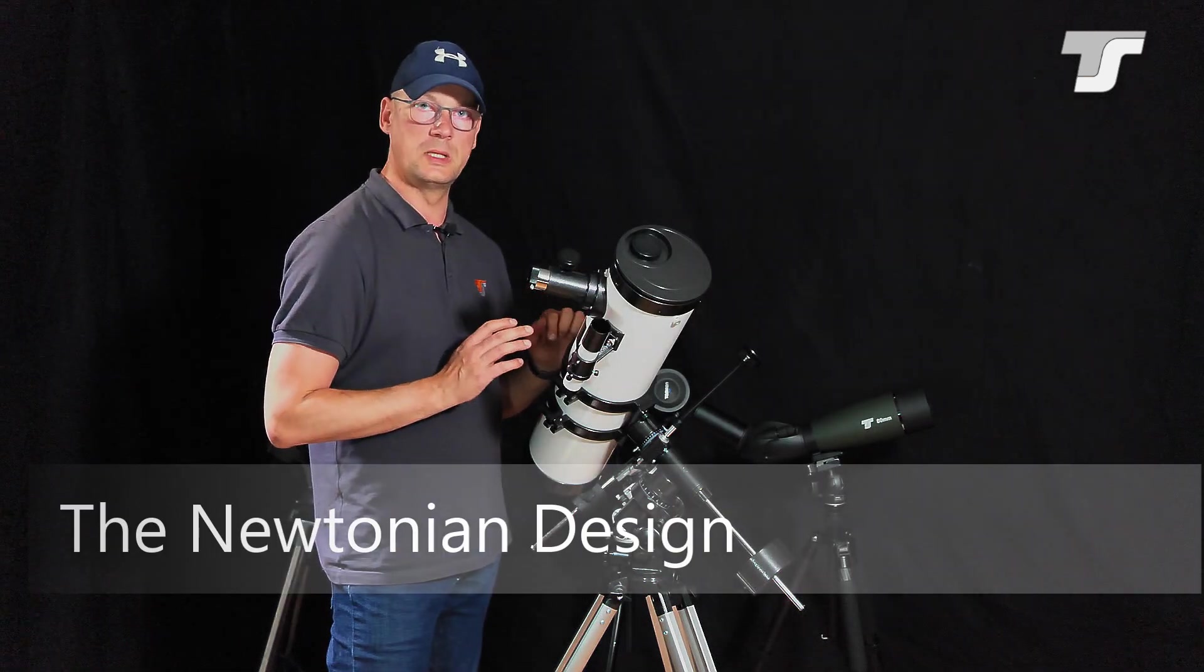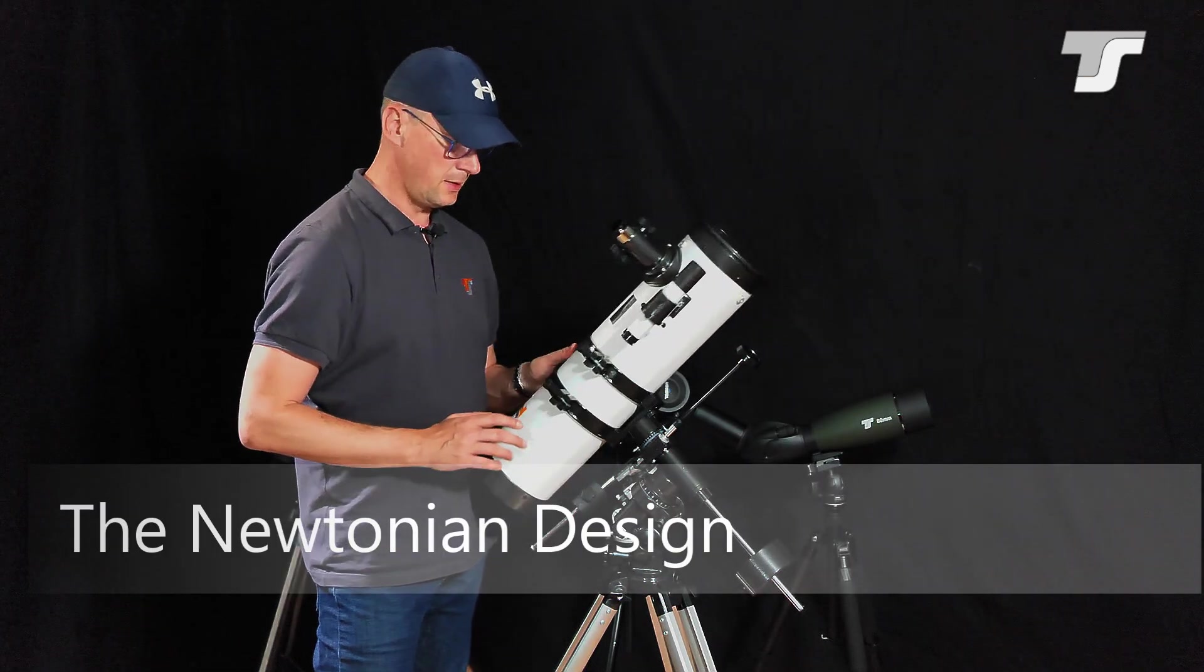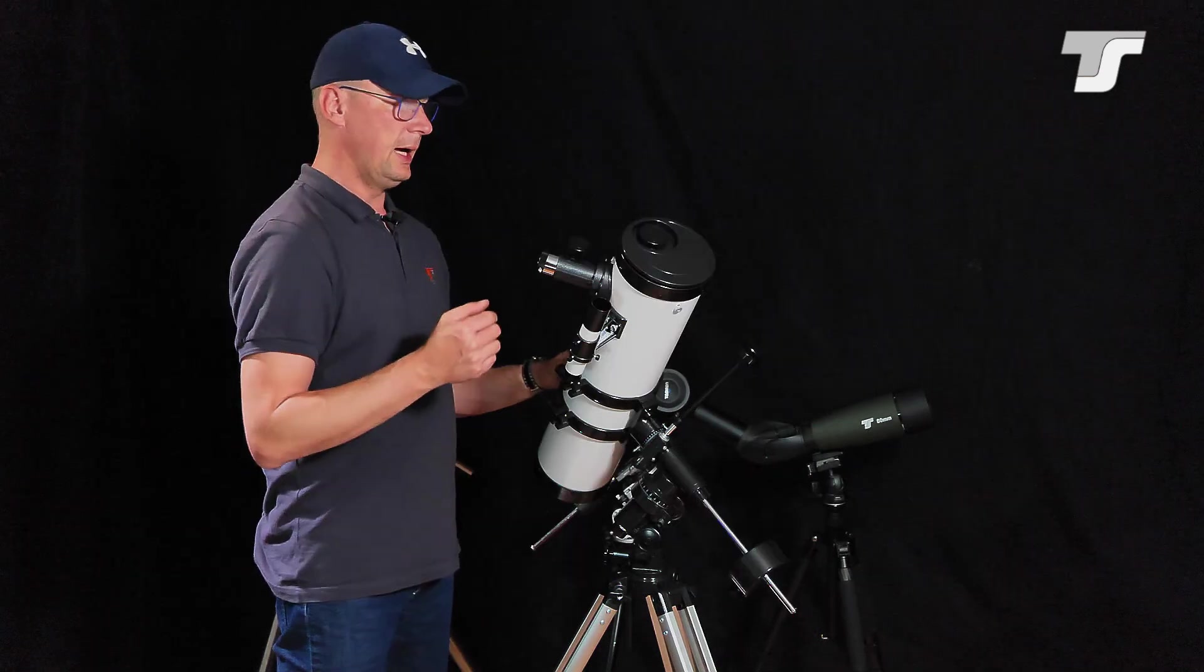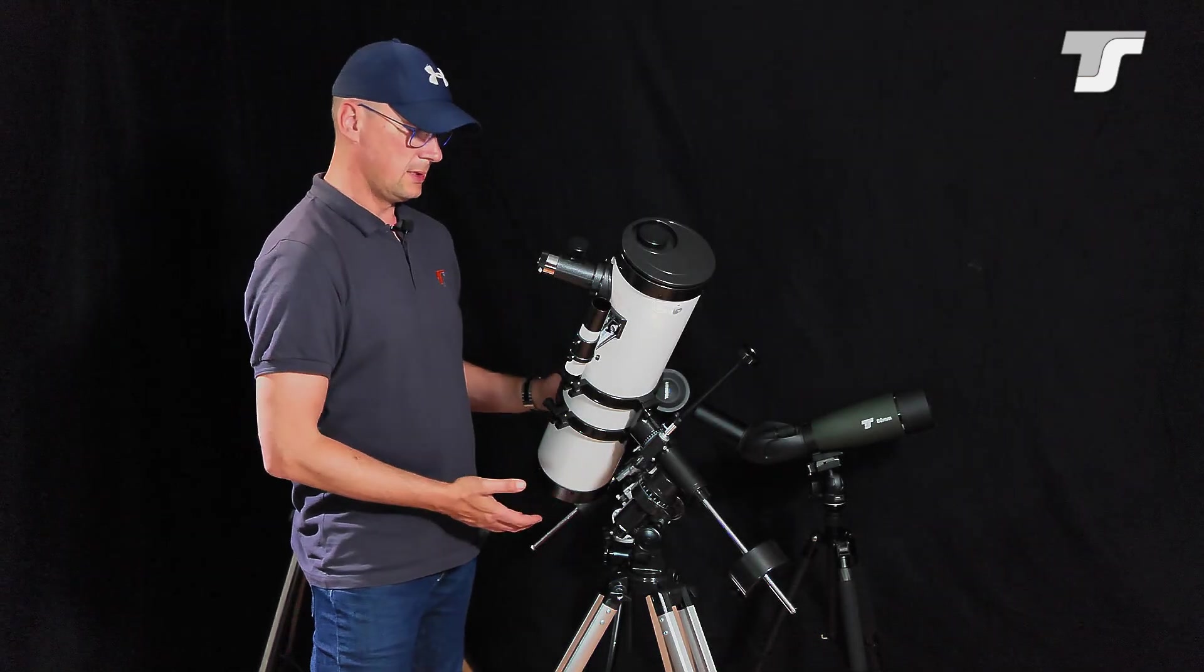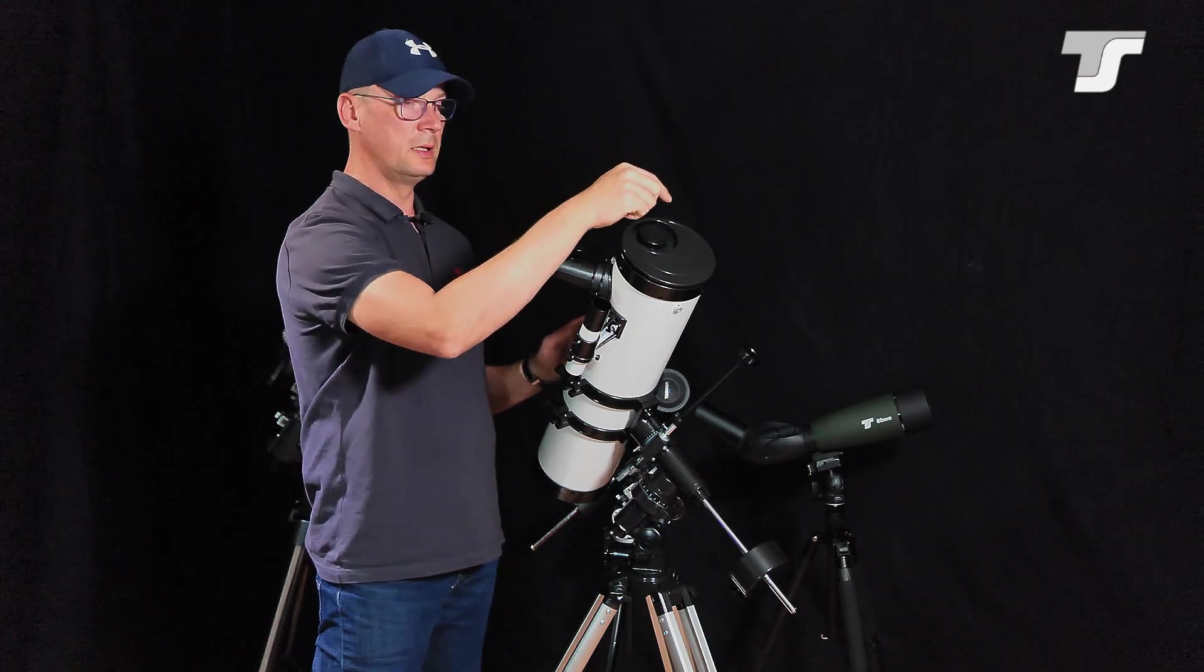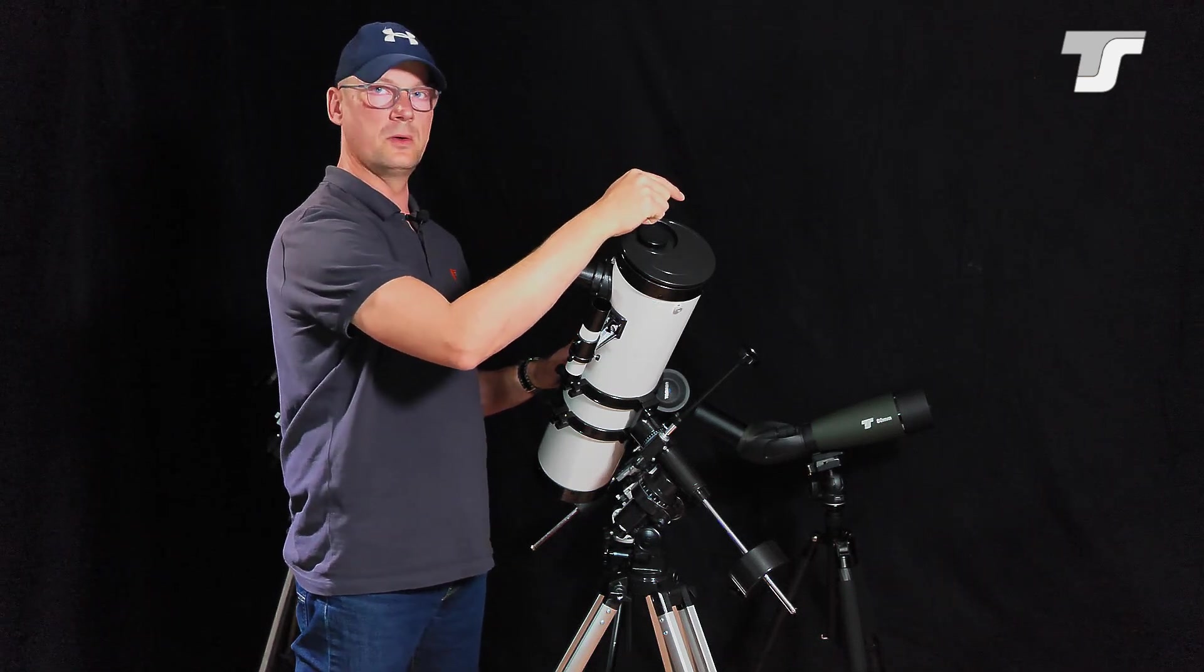With this Newtonian telescope, this is done with a curved primary mirror which is in the back here. The light is focused basically on a point somewhere like here.